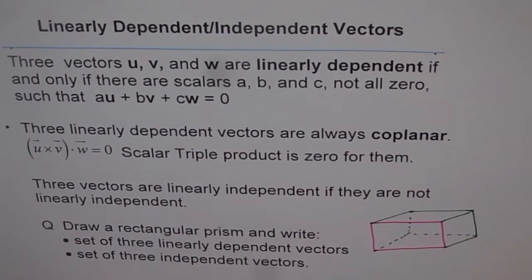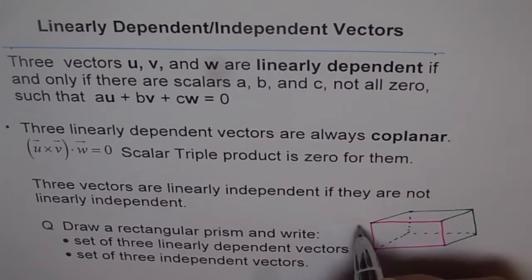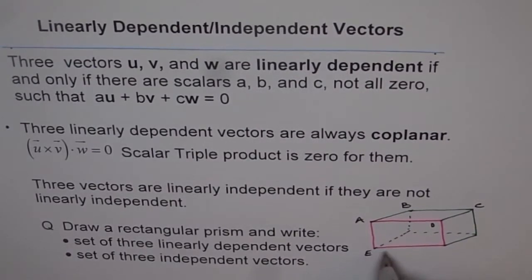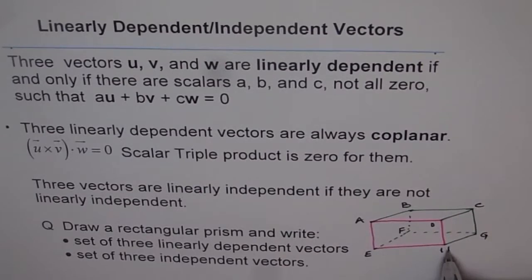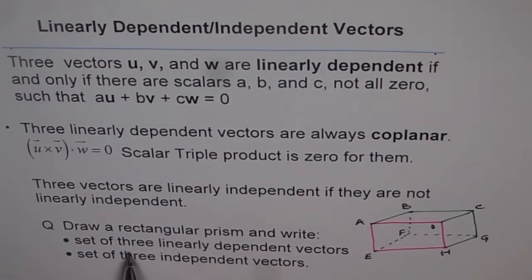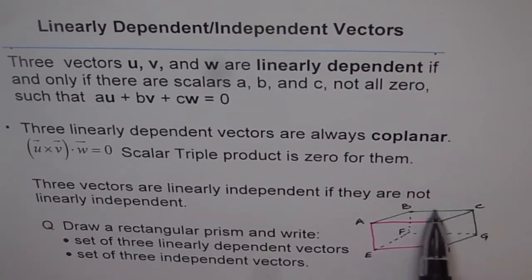Now, can you name three linearly dependent vectors? When we say linearly dependent vectors, they should be in the same plane — that is kind of important. Let me label the vertices as A, B, C, D, E, F, G, H. Which ones could form linearly dependent vectors? When we say linearly dependent, they have to be in the same plane — for example, the top surface. All the vectors in the top surface form a set of linearly dependent vectors.